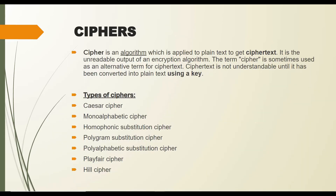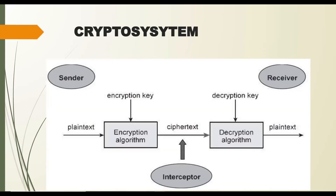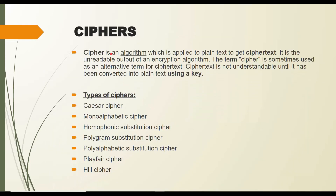Now, what are ciphers? A cipher is an algorithm applied to plain text to produce cipher text — simply put, it is coded text. The types of ciphers include Caesar cipher, mono-alphabetic cipher, homophonic substitution cipher, polygram substitution cipher, poly-alphabetic substitution cipher, Playfair cipher, and Hill cipher.